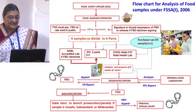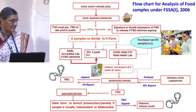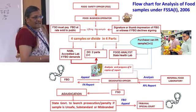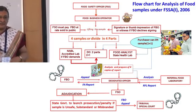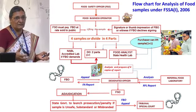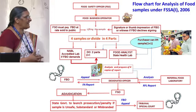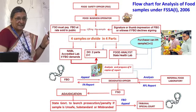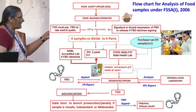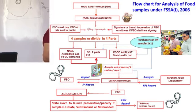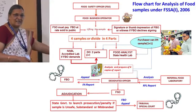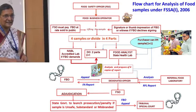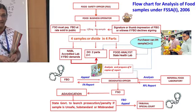This is the flow chart for analysis under the FSSA. The FSO informs the food business operator, fills all forms, and takes either four packaged samples — which must be from the same lot, same batch number, and same manufacturing date — or, for loose food, takes a representative sample and divides it into four parts, all of which must be representative of the primary sample.